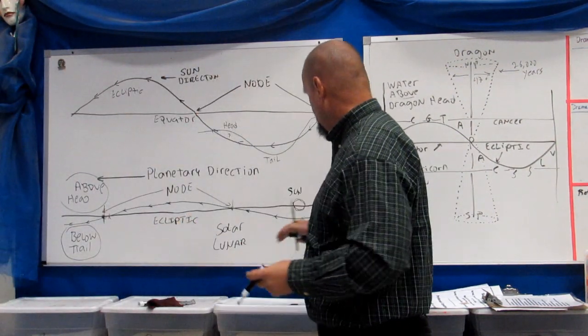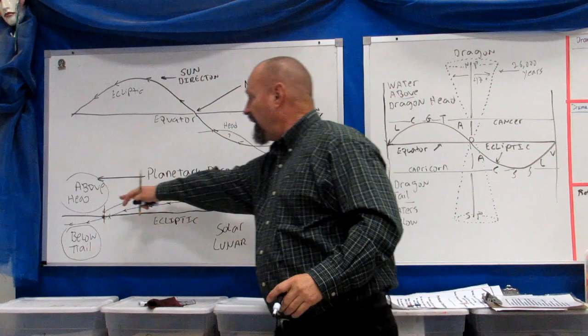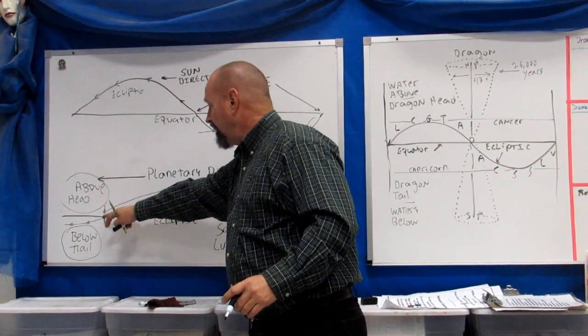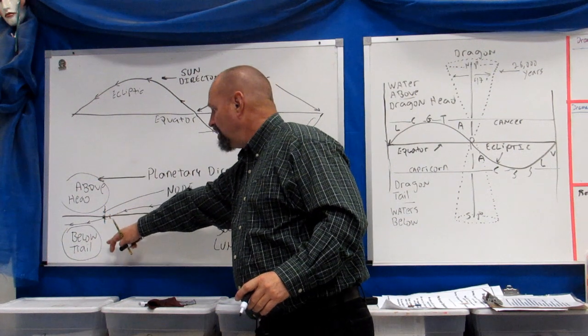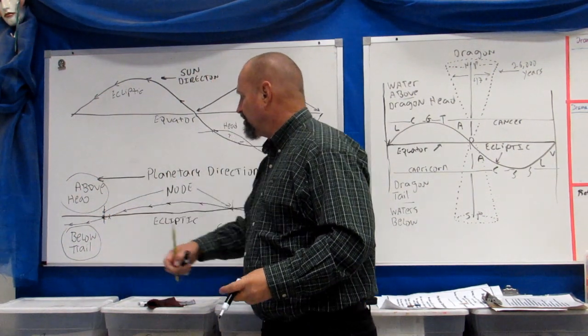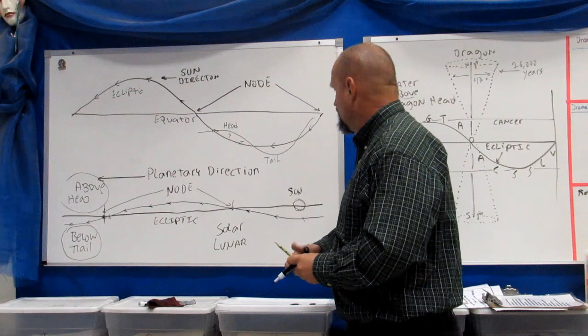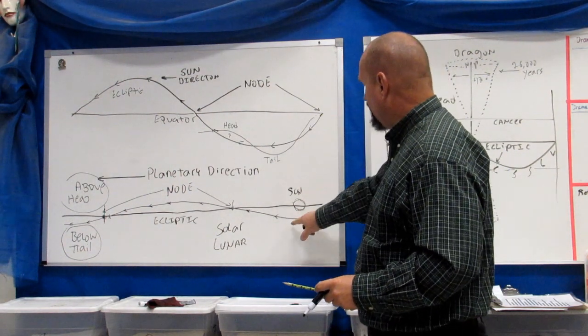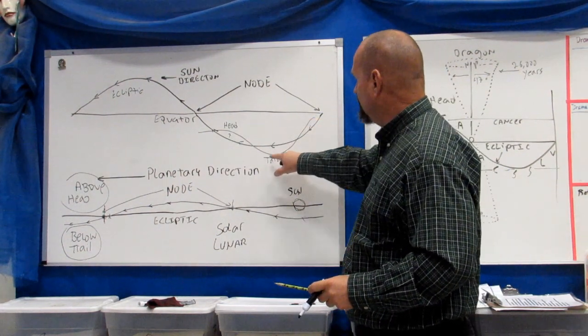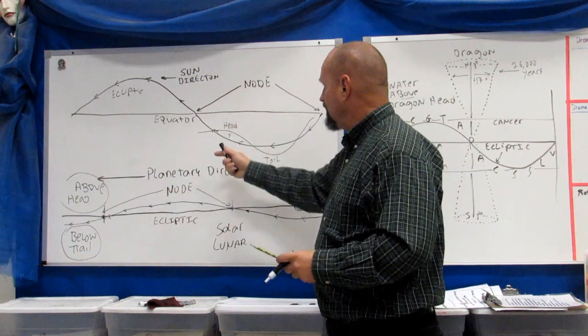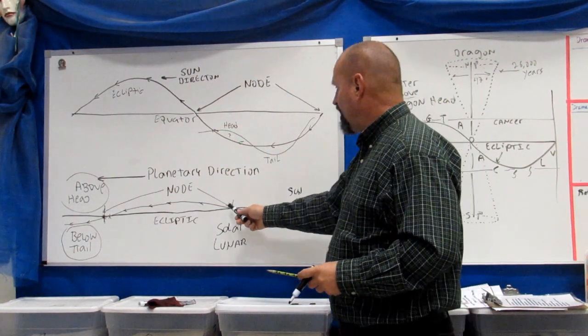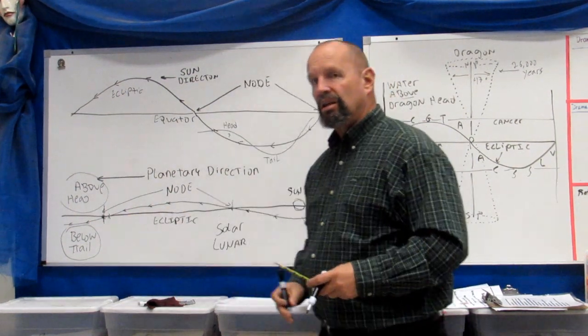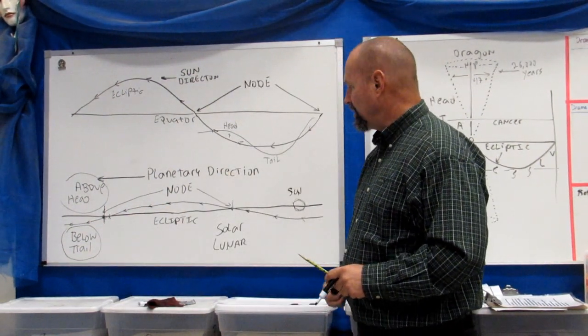Everything above the ecliptic line is considered the dragon head, everything below the ecliptic line is considered the dragon tail. You can see this line and the node points at the points of crossing. These nodes are the places where solar and lunar eclipses take place.